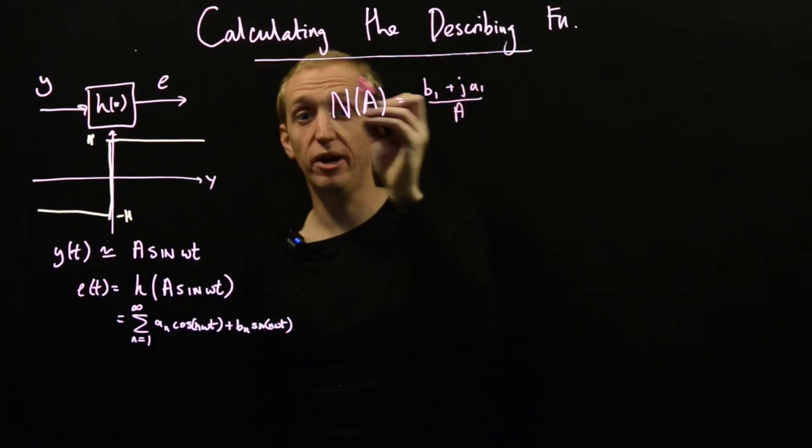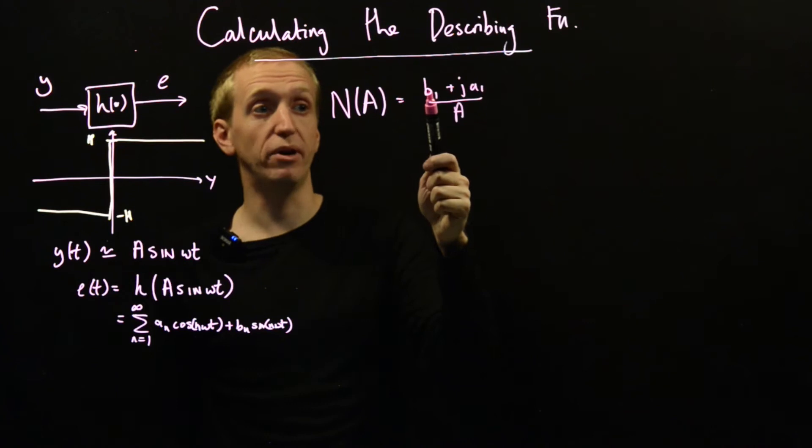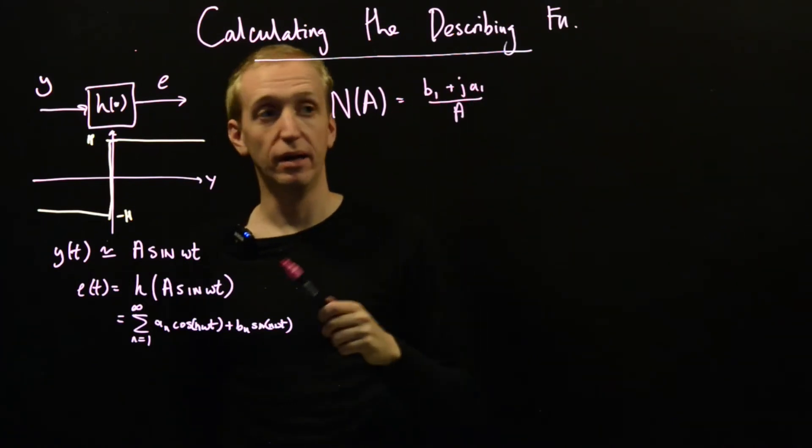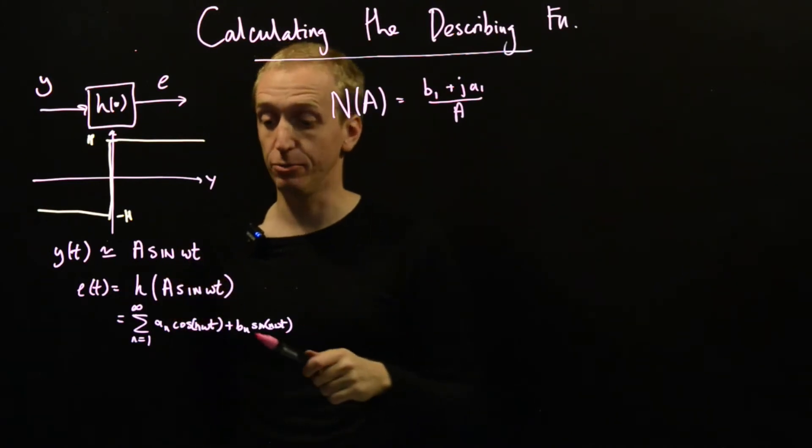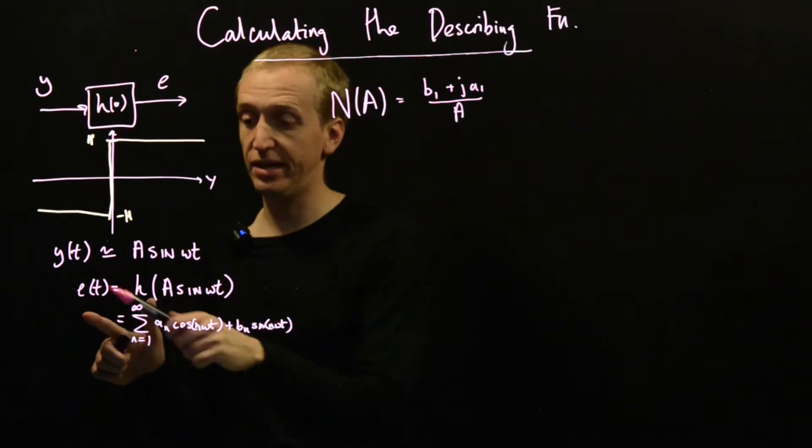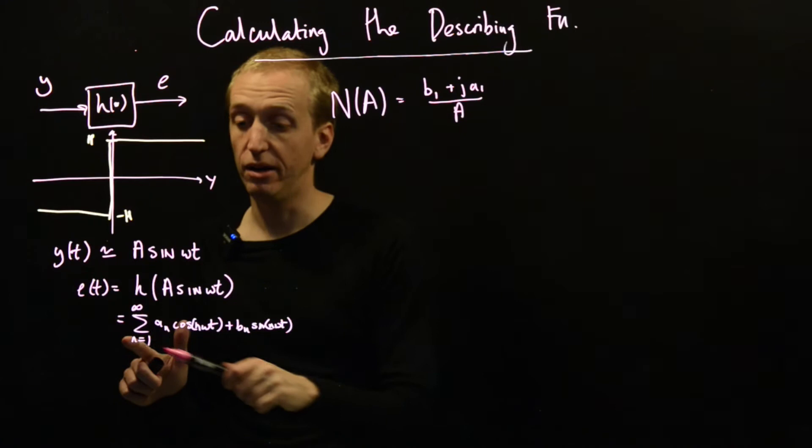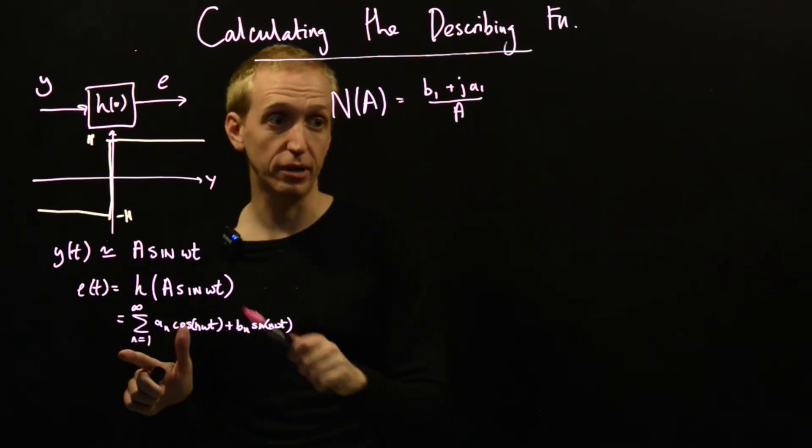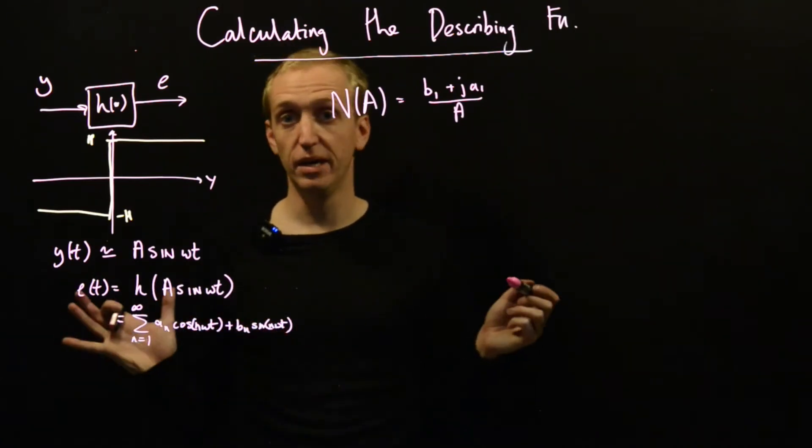So in order to find N(a), we just need to find the Fourier coefficients b₁ and a₁ as functions of a. So basically, we just need to find out what e(t) is and find its corresponding Fourier coefficients. So that's what we're going to do.